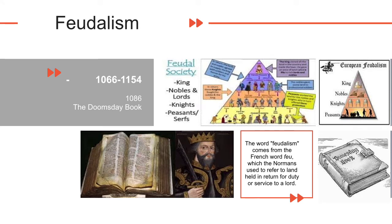The Normans introduced the name feudalism for this system, but the structure itself was several centuries old. The word feudalism comes from the French word 'feud', which the Normans used to refer to land held in return for duty or service to the lord. The basis of feudalist society was the holding of land, and its main purpose was economic.